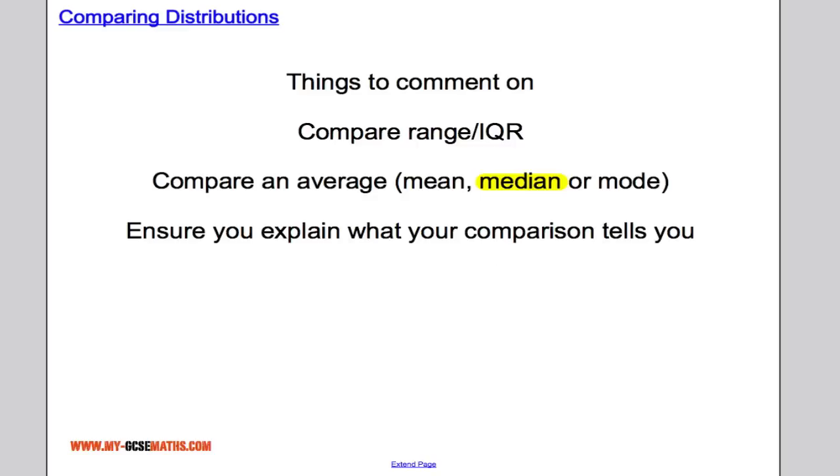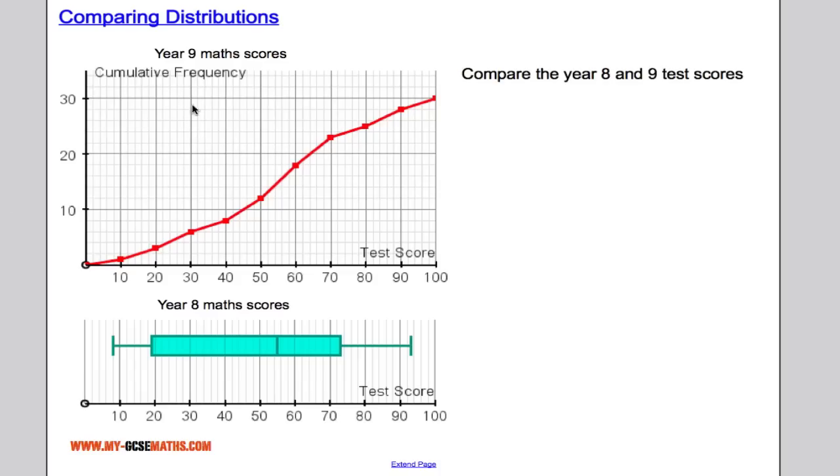So let's take a look at an example here. So we've got a cumulative frequency curve displaying the year 9 math scores, and we also have a box and whisker plot displaying the year 8 test scores, and we're asked to compare the two classes.